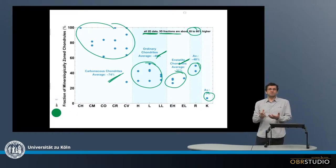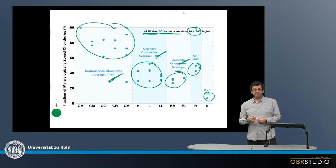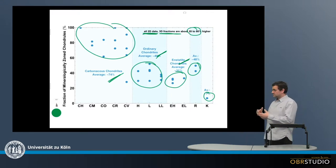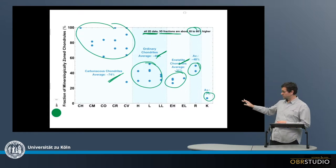So in summary, the zoned chondrules are very abundant in all chondrites. And maybe even in all chondrites, the dominant chondrule type. Maybe not in ordinary chondrites, but likely in the others except for the K chondrites.